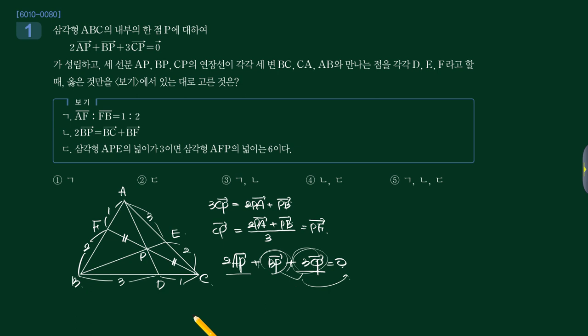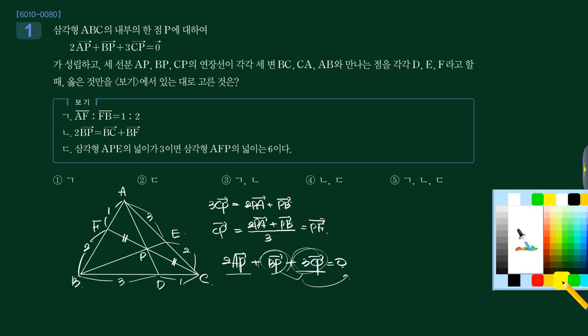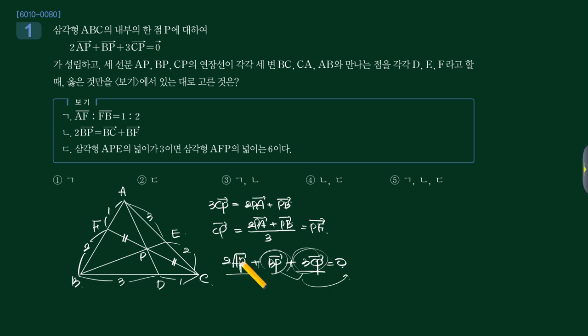그 다음 여러분 또 기억하고 있어야 될 거, 안 까먹었을래나. 여기 앞에 계수가 어떤 역할을 해 줍니까? A의 계수가 2네, B의 계수가 1이네, C의 계수가 3이네. 이거 뭐 알려주더라? 넓이죠.